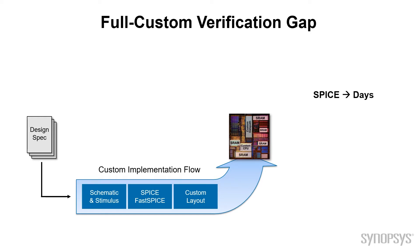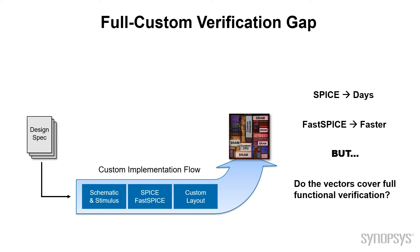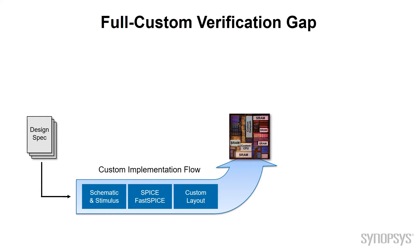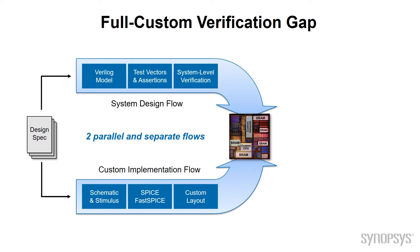But for most designs, SPICE level verification is just not possible as the overall design is too complex. Higher level fast SPICE tools can be used to allow even more vectors to be explored, but even then, verification of the function is known not to be complete. Meanwhile, a separate person or team develops a Verilog model with its own set of test vectors and runs many simulations to ensure the design is functionally correct. The system level verification team uses these models and assumes — or hopes — that they are correct.